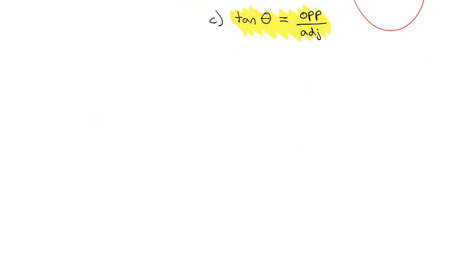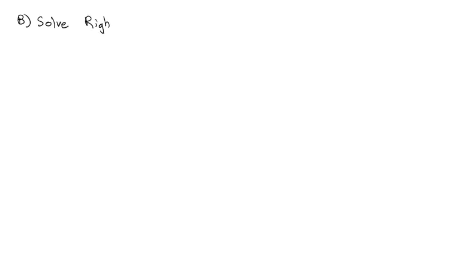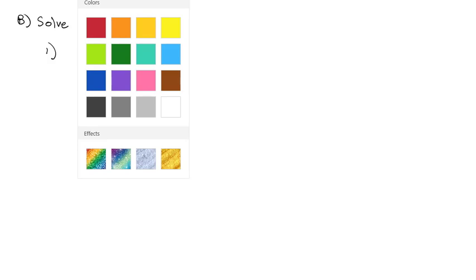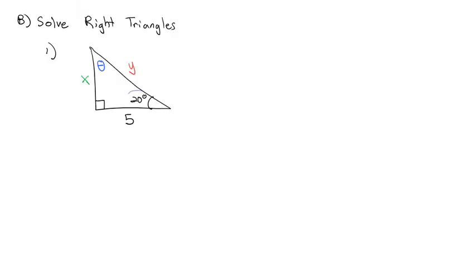To help remember, some people like the mnemonic SOH-CAH-TOA: Sine is opposite over hypotenuse, Cosine is adjacent over hypotenuse, Tangent is opposite over adjacent. However you remember it is up to you, but you need to know each of those ratios so that you can solve triangles. Now we're going to solve right triangles. If I have this triangle where the angle is 20 degrees and the side below it is 5, the 5 is the adjacent side, x across from it is the opposite side, and y opposite the right angle is the hypotenuse.